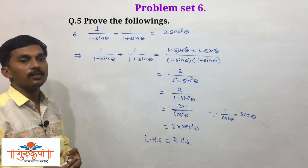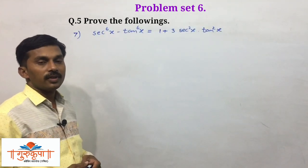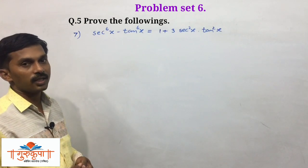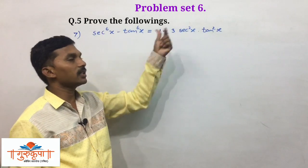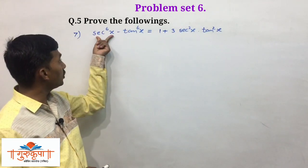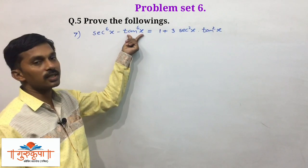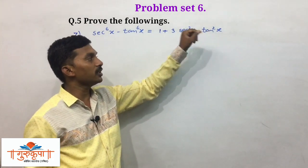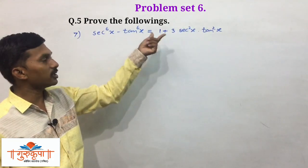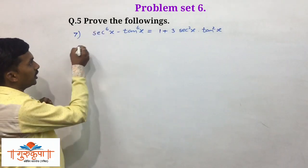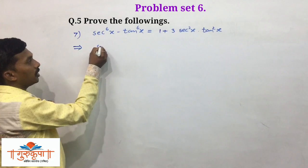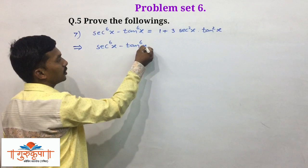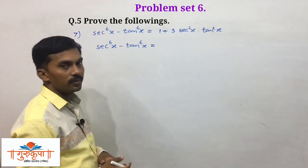We will take the next example — example number 7 from question number 5, problem set 6. We have to prove that sec to the power 6x minus tan to the power 6x equals 1 plus 3 times sec squared x times tan squared x. We will first write LHS: sec to the power 6x minus tan to the power 6x. The first step is very important: we write sec to the power 6x as (sec squared x) cubed.